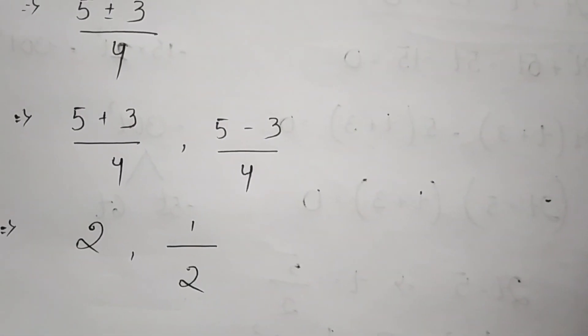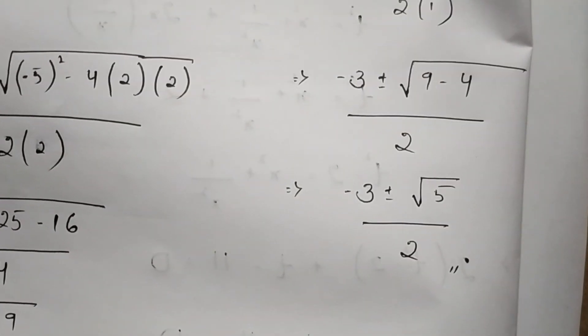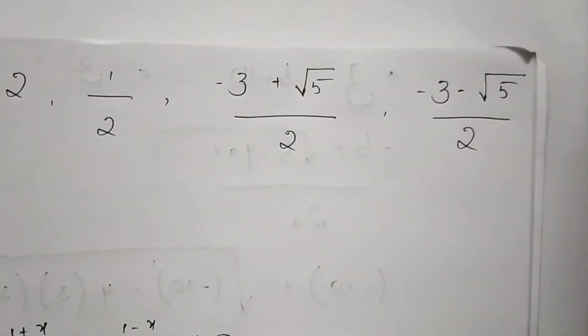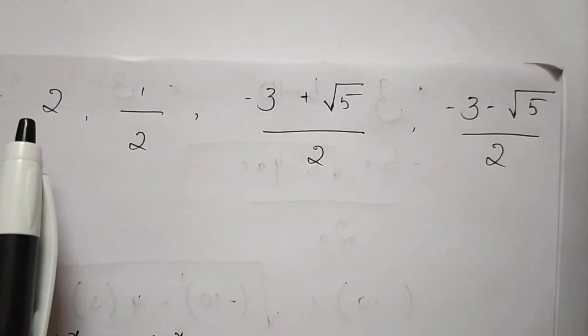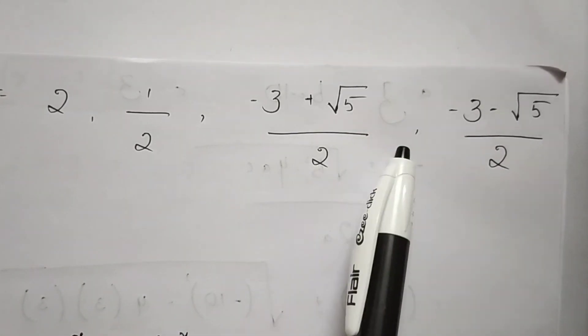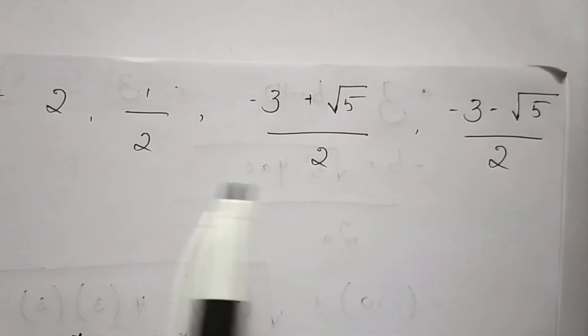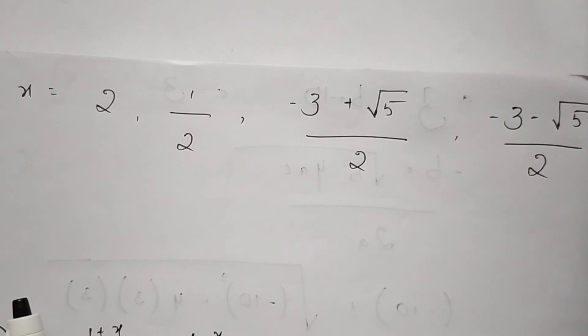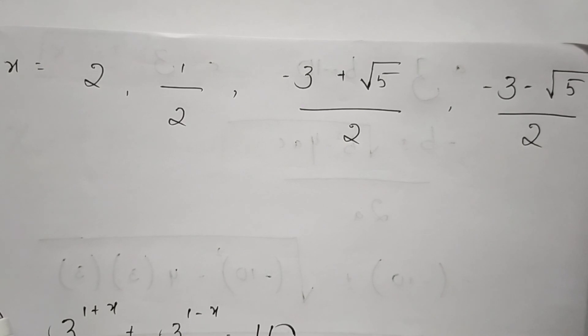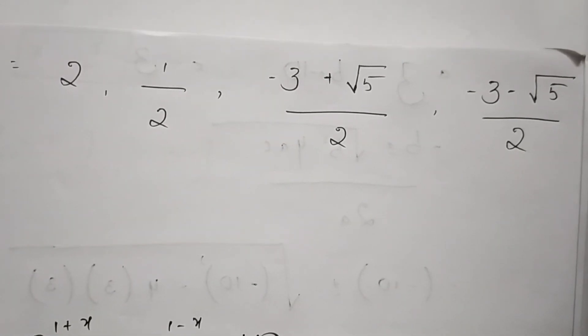Finally, we got four values. The two values from t = 5/2 are x = 2 and x = 1/2. The next two values are x = (-3 + √5) / 2 and x = (-3 - √5) / 2. Therefore, these four values are the final values of x that satisfy the given equation. Thank you for watching.